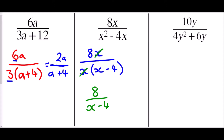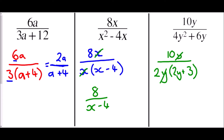In our third question we have 10y over 4y² + 6y. Do we have a common factor in the denominator? Well, 4 and 6 are both even so we have a factor of 2, and we also have y² and y giving a factor of y. So the common factor is 2y, giving 2y(2y + 3). We cancel the y and then the 2, so the fraction simplifies to 5 over (2y + 3).